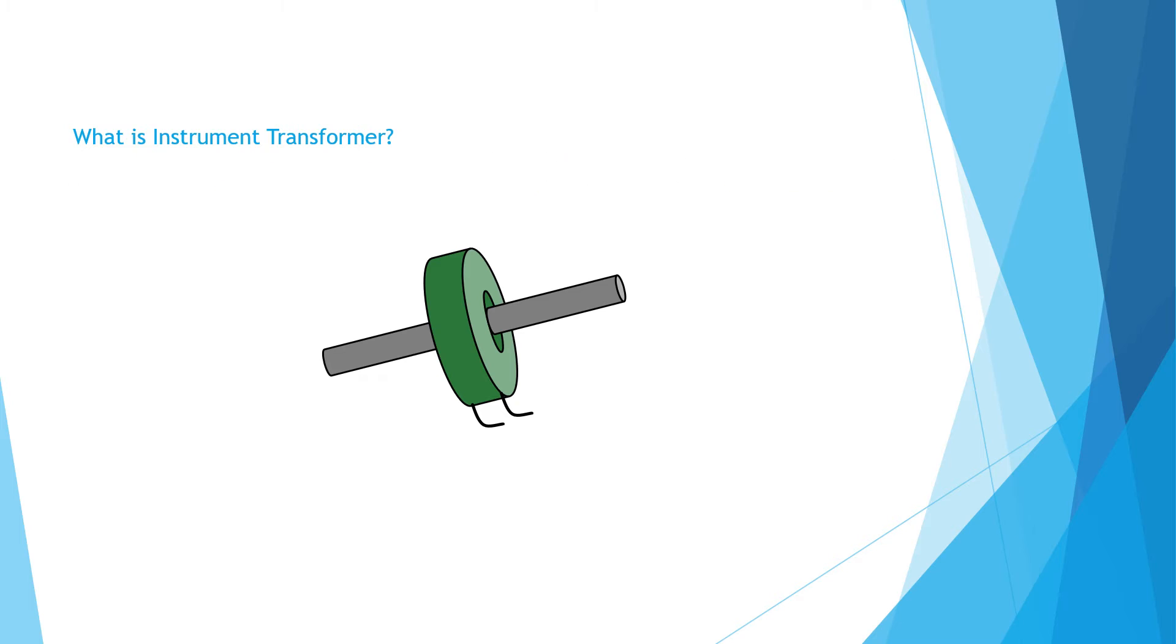Please look at the picture of a round type CT. Through its center, a conductor or bus has been inserted which acts as primary winding. Round CT is an assembly of core and winding, that is secondary winding.